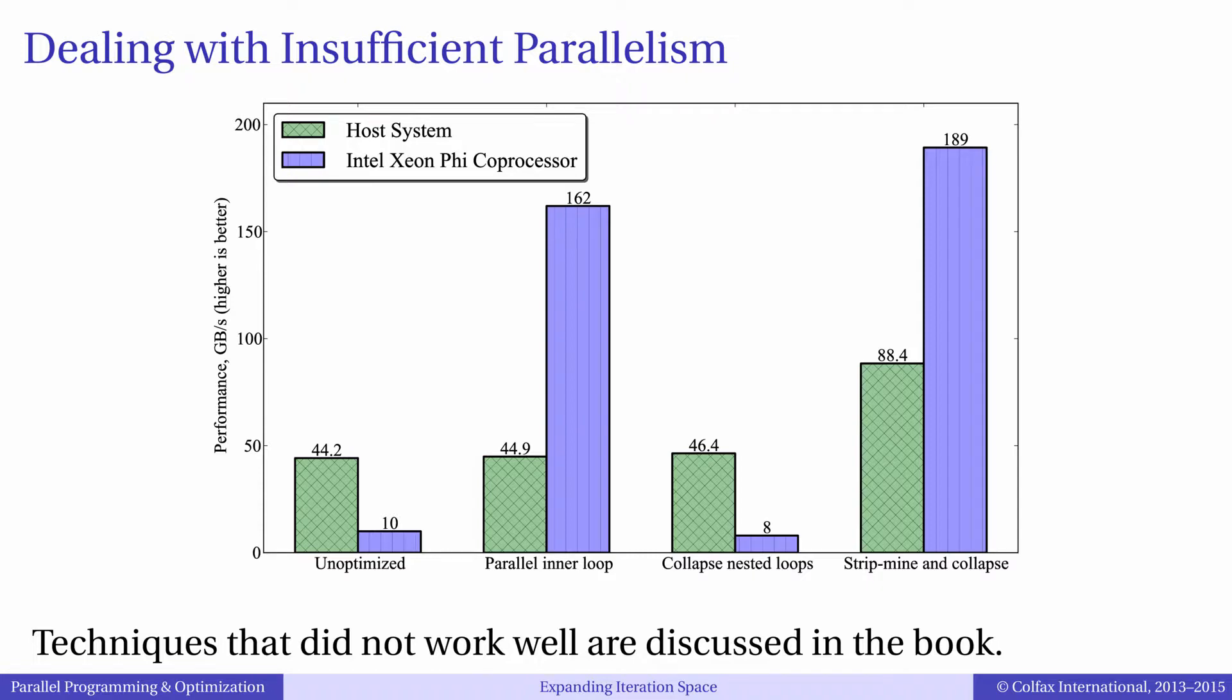Finally, here are the performance measurements. We report them in units of gigabytes per second because it is obviously a memory-bound application. The first set of bars is the initial code, where only four threads are working.